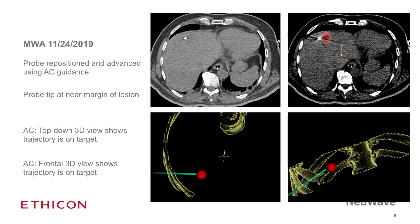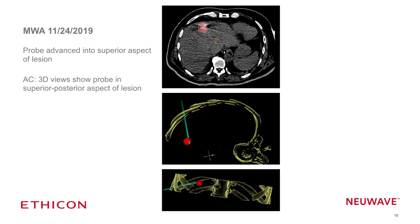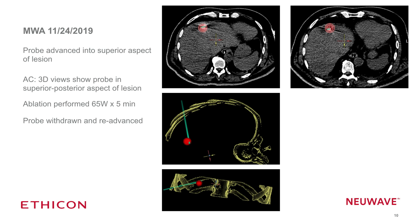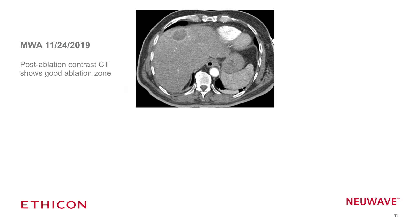We advanced our probe. In this case we decided to do two adjacent ablations to ensure a good ablation zone, given the difficulty in visualization. We advanced first into the superior aspect of the lesion — the 3D views confirmed the probe was well positioned in the superior posterior aspect — and performed a five-minute ablation at 65 watts. We then withdrew and readvanced the probe into the inferior anterior aspect of the lesion, confirmed also with the ACS three-dimensional views, and performed a second 65-watt, five-minute ablation.